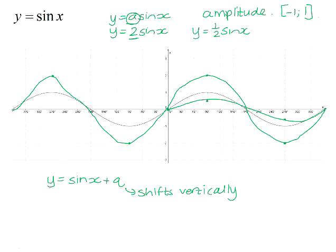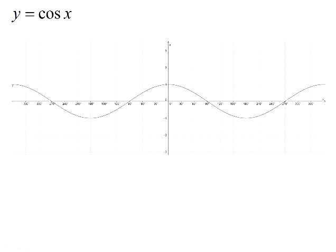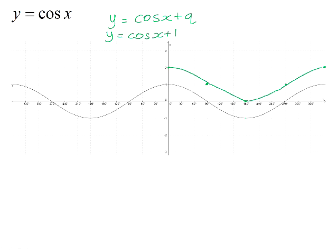Looking at the cos graph — y equals cos x plus q — the a value has exactly the same effect on the cos graph as it does on the sin graph. If we sketch y equals cos x plus 1, we literally pick the entire graph up and move it one unit up. So instead of a point at (0, 1) you'll have (0, 2); instead of (90, 0) you'll have (90, 1); instead of (180, -1) you'll have (180, 0), and so on. You translate the whole graph up by the value of q.